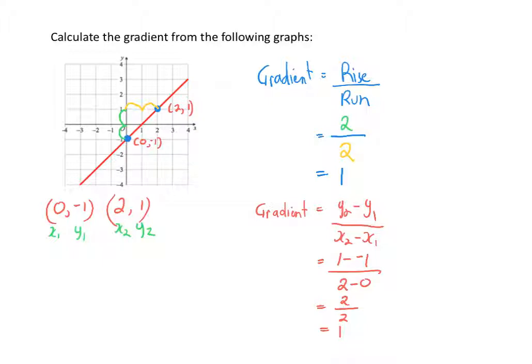So the gradient of the straight line shown in the graph is 1. You'll also note that the straight line in the graph is sloping upwards, so you would expect your gradient to be a positive answer, which matches what we have calculated. You don't always need to calculate it under both options — when you're using a graph, you can use one or the other. So that's an example of how to calculate the gradient of a straight line.